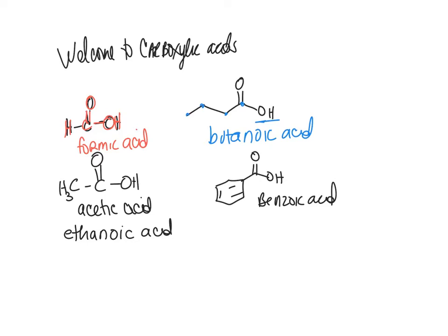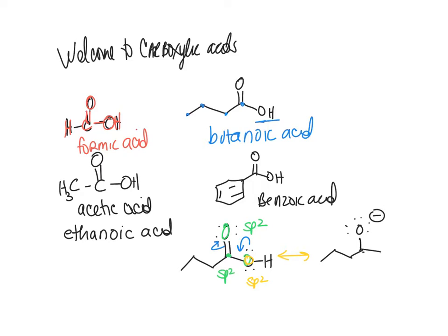Let's look at the structure of the carboxylic acid group using butanoic acid. The oxygens have two lone pairs. The carbonyl oxygen is sp2. What about the OH oxygen? That's also sp2, because you can draw resonance structures — those lone pairs participate in resonance, so it needs an unhybridized p orbital. This means the carboxylic acid group is planar: trigonal planar.